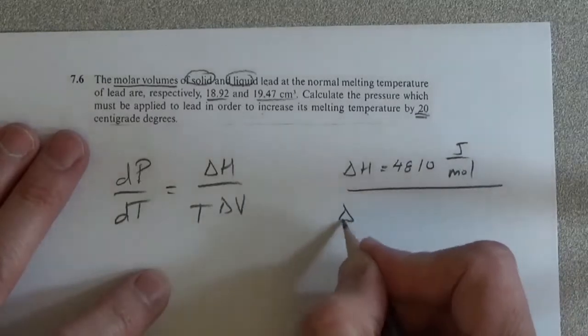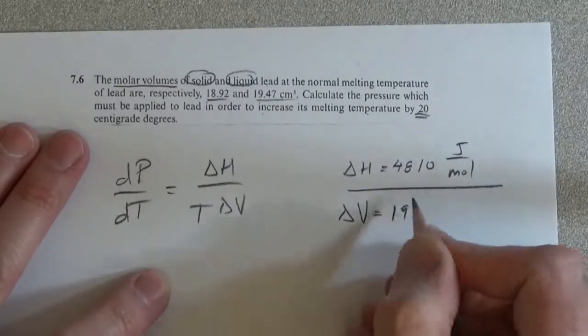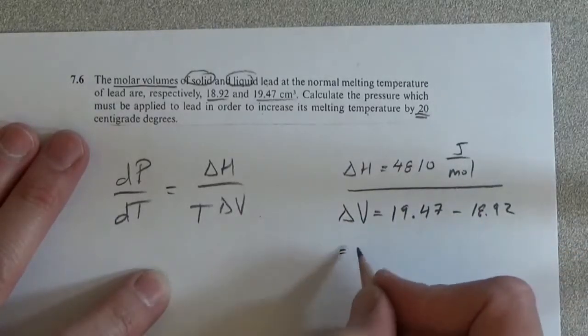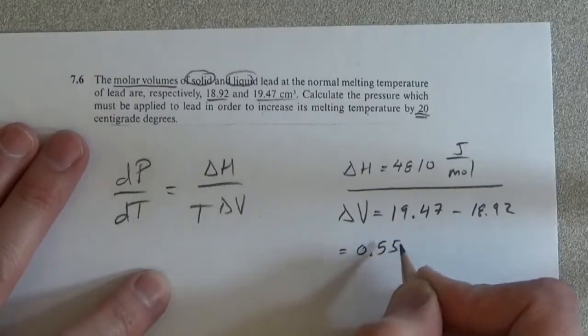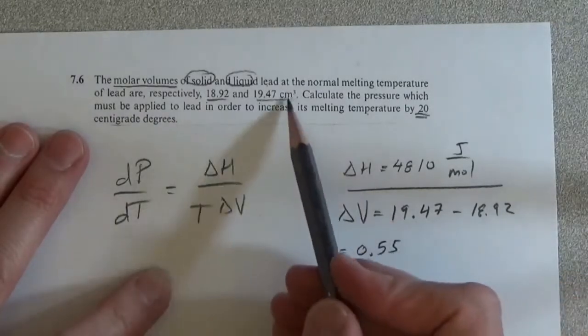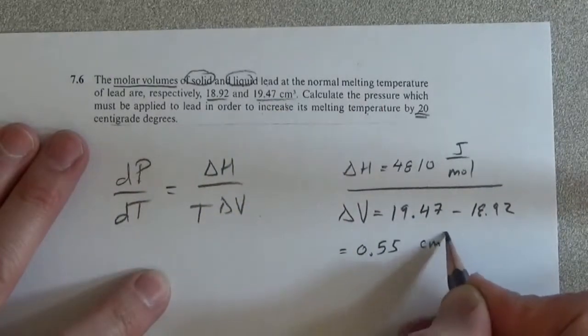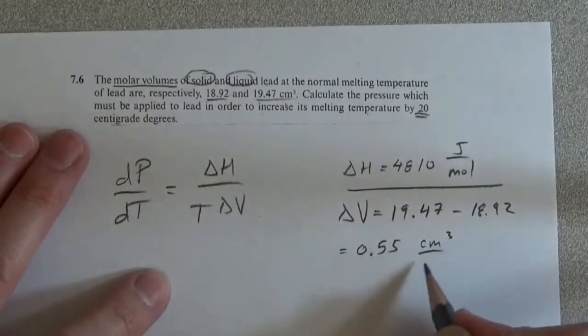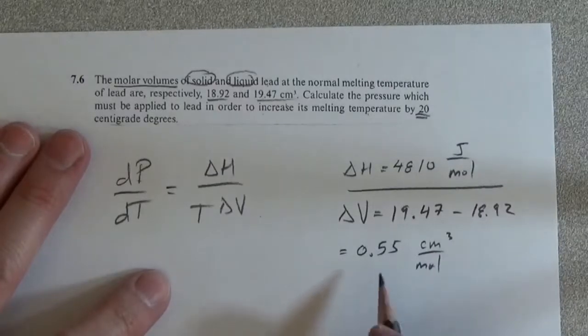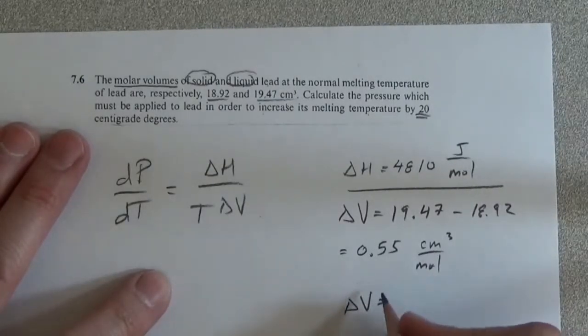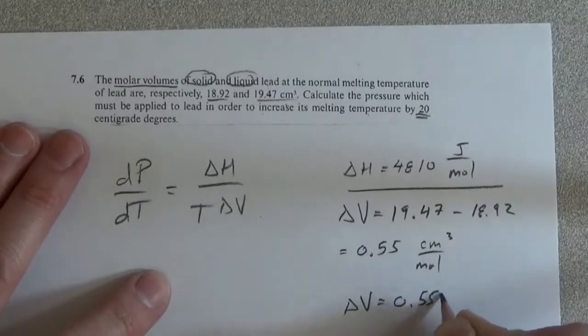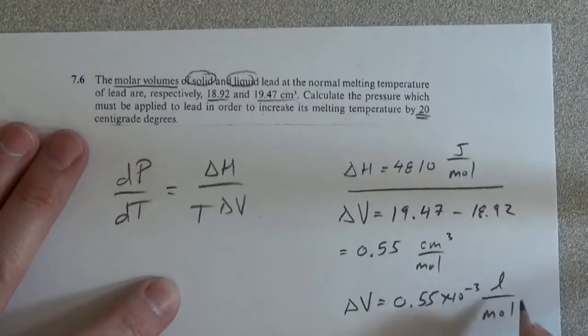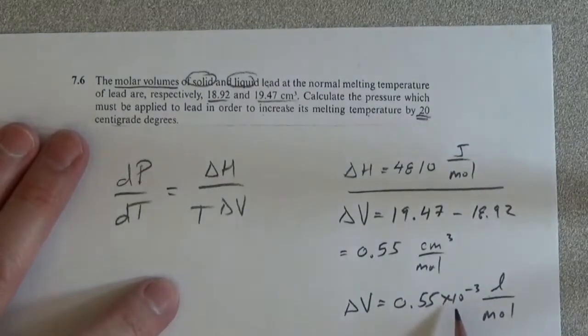We have delta V is equal to 19.47 minus 18.92 is equal to 0.55, and this is in cubic centimeters per mole. And we're going to be doing everything in liters, so that's going to be delta V is equal to 0.55 times 10 to the minus 3 liters per mole, since there's a thousand cubic centimeters per liter.